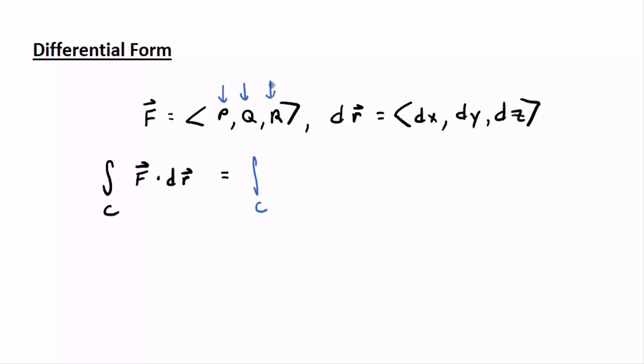So one interpretation notationally of the integral over the vector field, integral over C f dot dr, is you could take f and replace it with the p, q, r. Those are the components of the vector field.